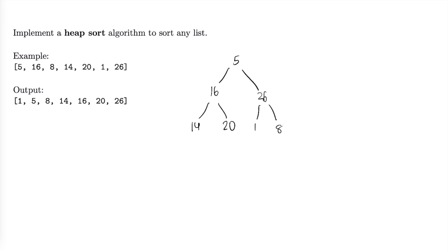Now let's move to 16. 20 is greater than 16, so we'll swap those two positions — now we have 20 and 16. Then we move up to the root node which is 5. Both 20 and 26 are greater than 5, so we're going to choose the larger of the two. We'll move 26 to where 5 is and move 5 to where 26 was.